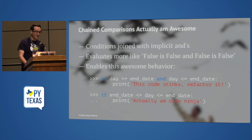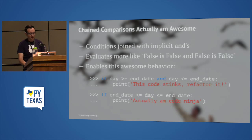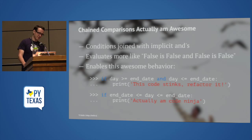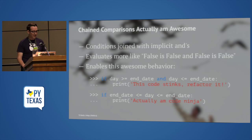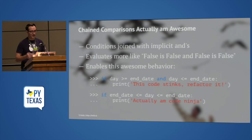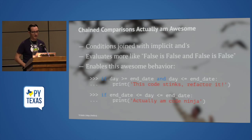'False is False is False' actually evaluates to something more like 'False is False and False is False', which is true. This enables great behavior: instead of writing 'if day >= start_date and day <= end_date', you can rewrite that as a chain comparison, running all your comparisons at once without having to join them with 'and' and restate the left-hand side.